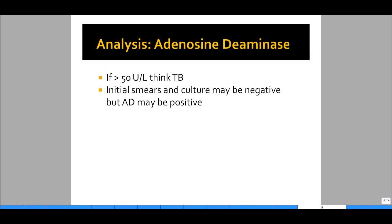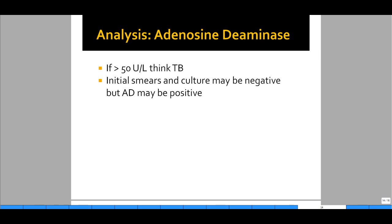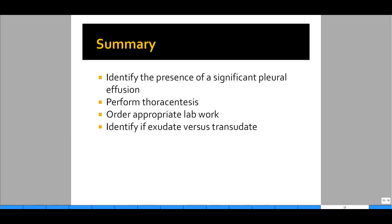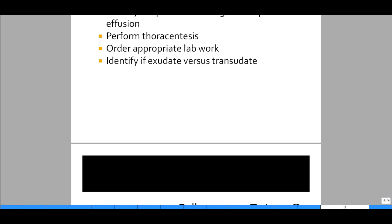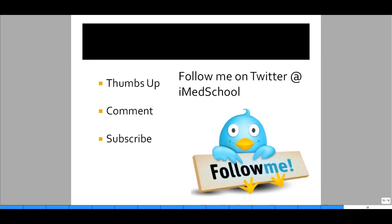Adenosine deaminase greater than 50 points toward TB. Initial smears and cultures can be negative while adenosine deaminase is positive in pleural effusions, but always follow up and clear a patient with three sputum cultures if you're thinking TB. In summary: to identify a significant pleural effusion, do a thoracentesis in patients with new onset pleural effusions, order the appropriate lab work, and use it to identify transudate versus exudate, then further use protein, LDH, and serum glucose to narrow your diagnosis. This is Rhys from The Medical School — thumbs up, comment, subscribe, and follow on Twitter at iMedicalSchool. Thanks for watching.